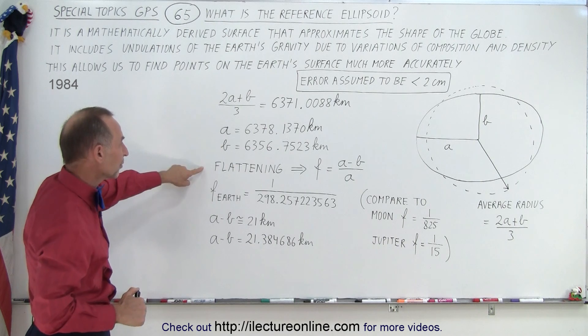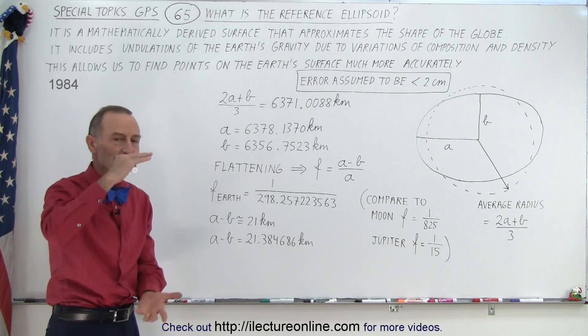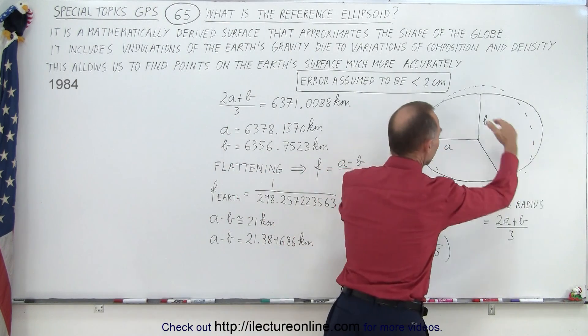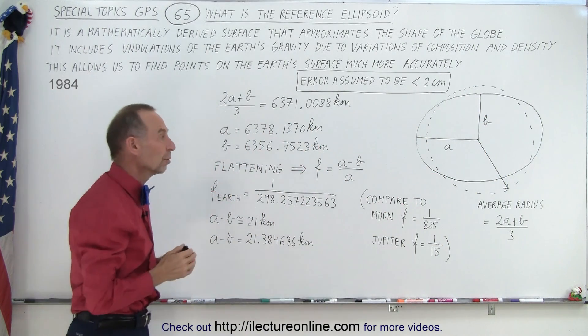We also need to account for the flattening. We need to know what that is because as the satellites go around the Earth, we want to understand the flattening of the Earth. In other words, the Earth tends to be wider at the equator than from pole to pole. That's due to the rotational motion.